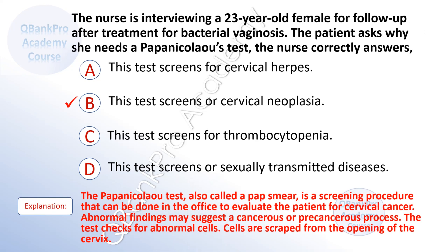The correct answer is B — this test screens for cervical neoplasia. The pap smear test is a screening procedure that can be done in the office to evaluate the patient for cervical cancer. Abnormal findings suggest a cancerous or precancerous process. The test checks for abnormal cells scraped from the opening of the cervix.